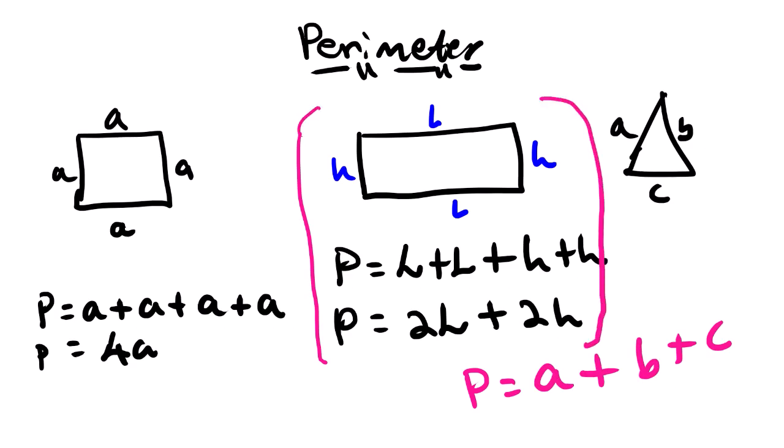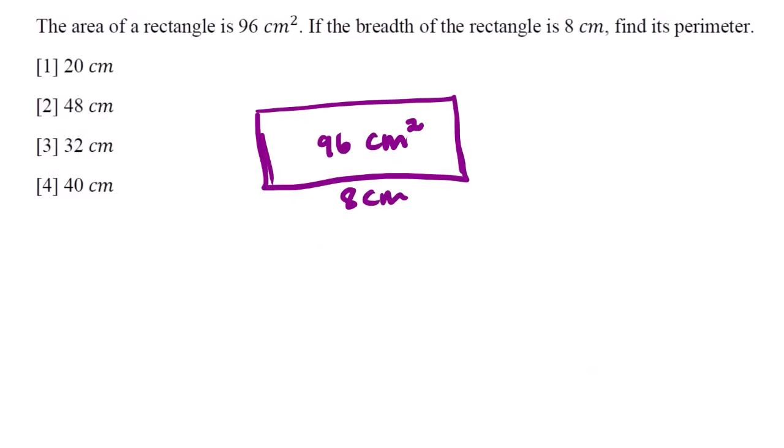Looking at our question, we can clearly see that the problem is that we don't have this side. We know that this side is 8 centimeters because opposite sides are the same, so we need all sides to calculate the perimeter. In order to do that, we are going to use the area equation to find one of the unknown sides.